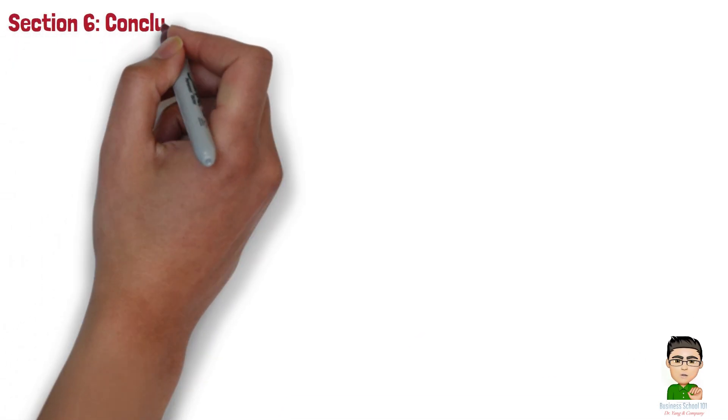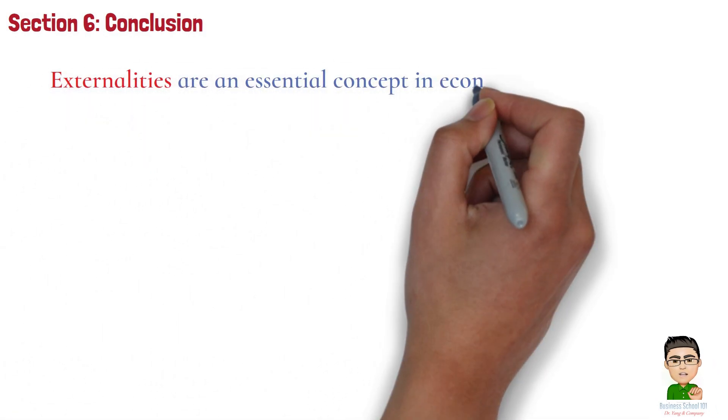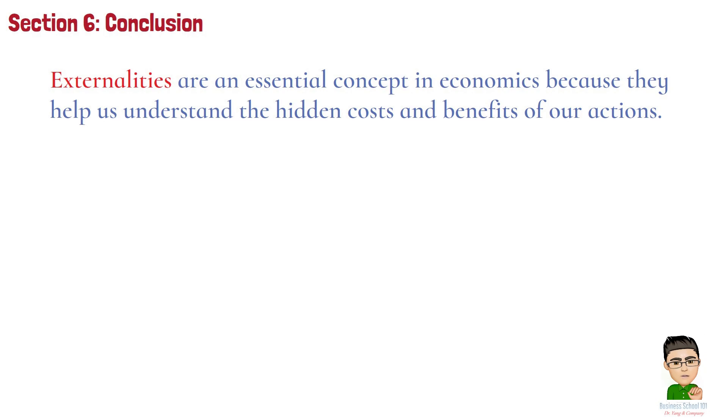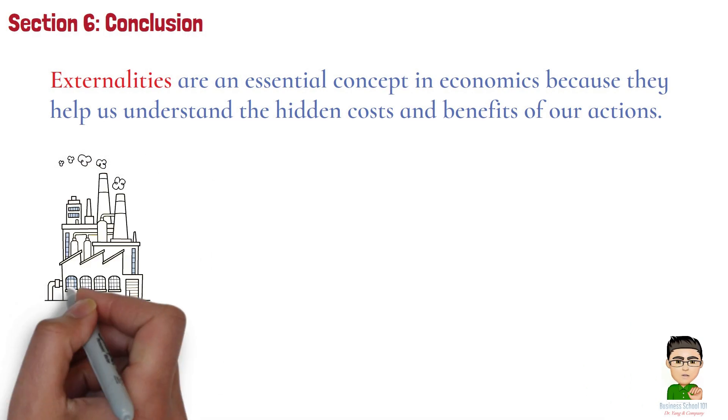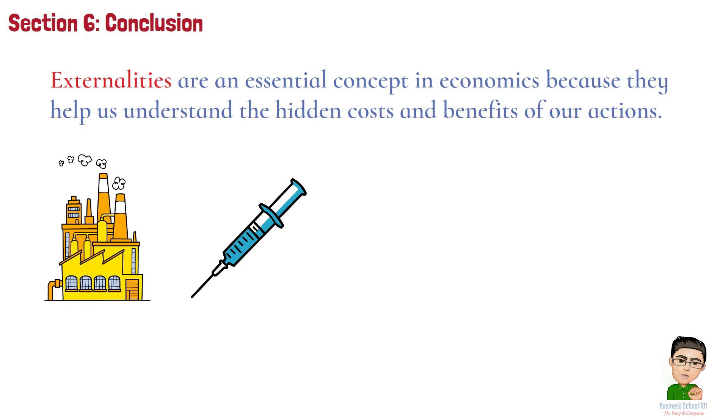Section 6, Conclusion. In summary, externalities are an essential concept in economics because they help us understand the hidden costs and benefits of our actions. Whether it's the air pollution from a factory or the social benefits of vaccination, externalities remind us that our choices don't exist in a vacuum, they affect others, often in ways we can't immediately see.